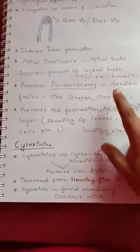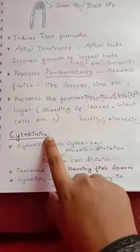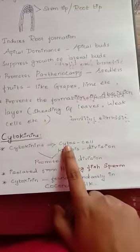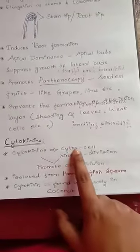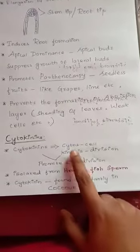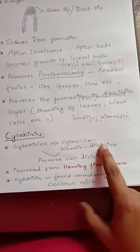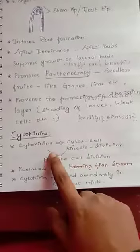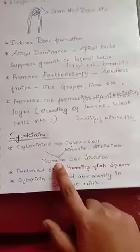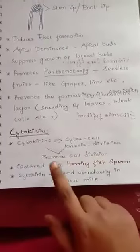We saw about auxins, now we're going to see about cytokinins. Cytokinin is divided as 'cytos' and 'kinases' — cytos means cell, kinases means division. Cytokinins are the chemical substances which promote cell division.